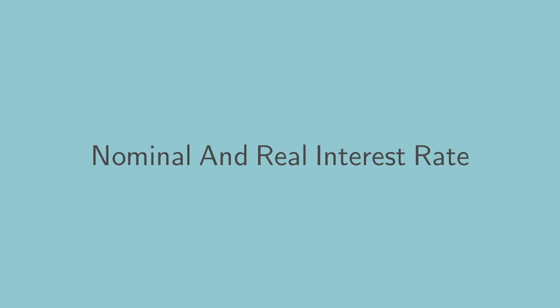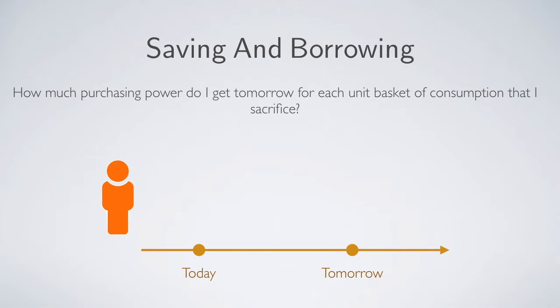First, we want to learn the difference between nominal and real interest rate. To understand the purpose of learning, we need to reconsider the motivation of saving. When a person saves, what he cares about is not really the money he can get — what he cares about is the purchasing power. The exact question the saver asks is: how much purchasing power do I get tomorrow for each unit basket of consumption that I sacrifice?